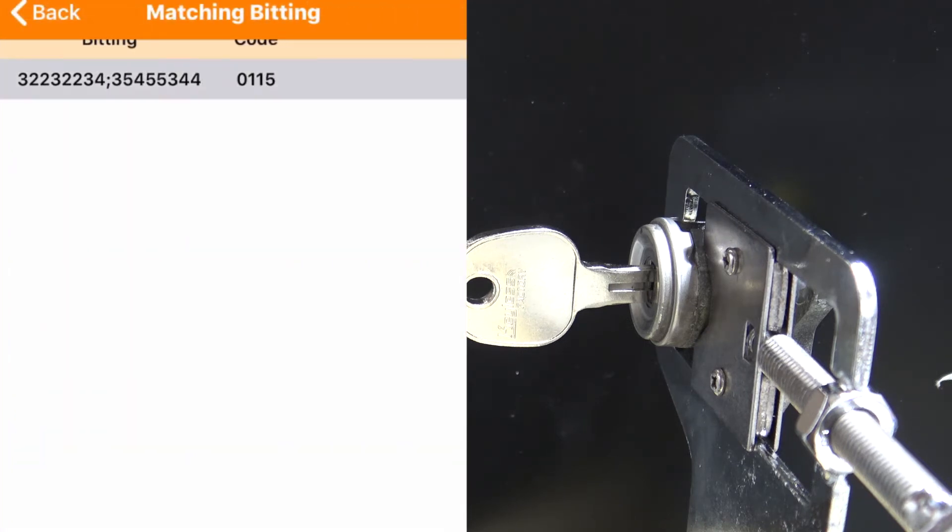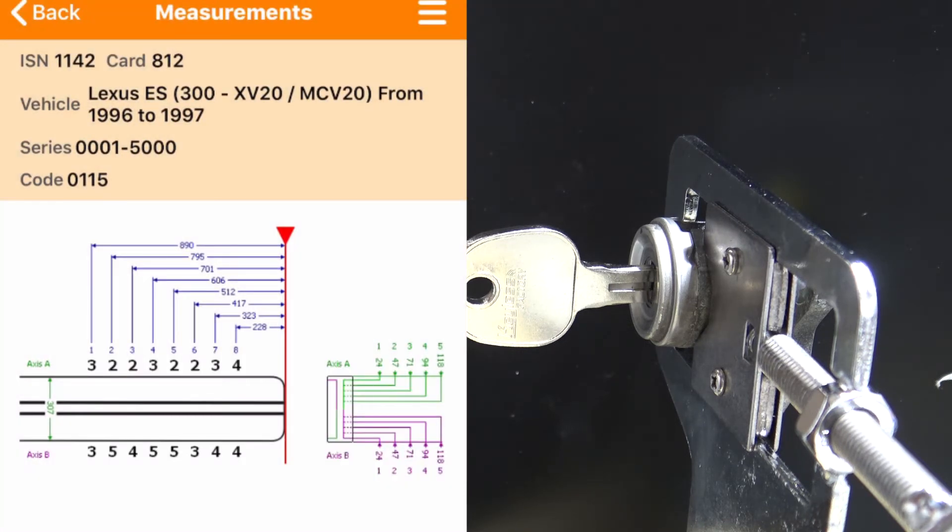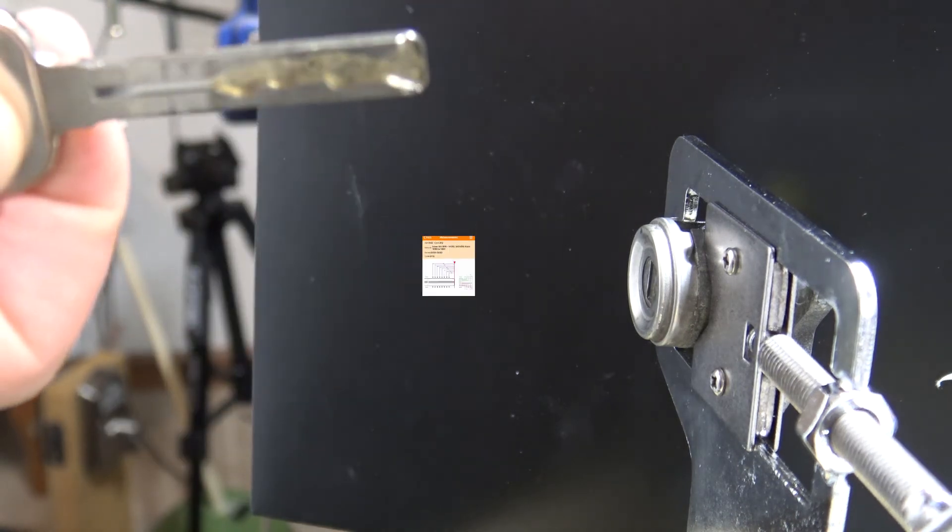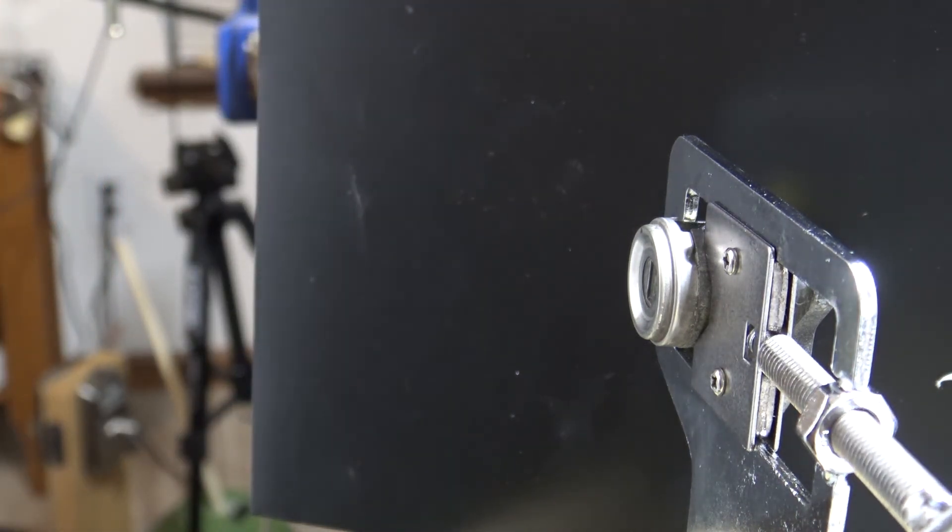And leave the eighth spot blank. And notice we're going to get one code that pulls up, and that actually gives us all of our bitting for the A track. And so we know we actually decoded it correctly and we're able to cut a key, which is what we see right here. That's actually the key with that bitting on it.